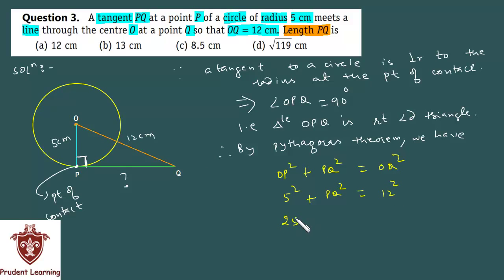Now, 5² is 25, plus PQ² as such (because you need to find PQ) equals 12² which is 144. PQ² remains here, and when you move 25 to the RHS it subtracts: 144 minus 25. Which gives us PQ² - let me write this properly.